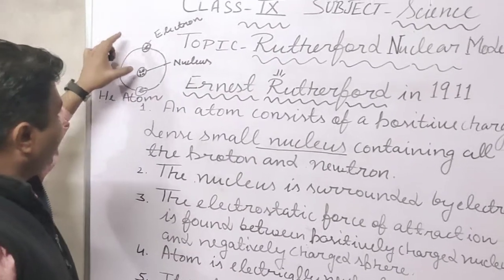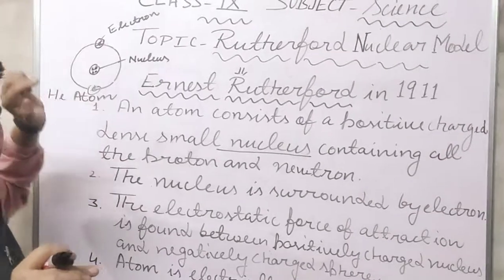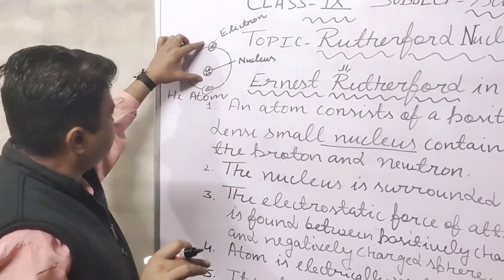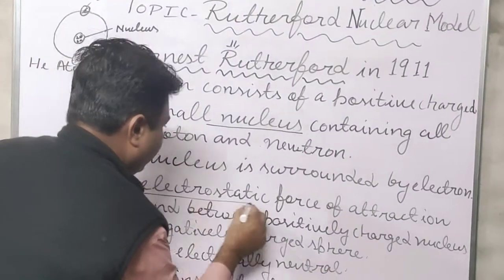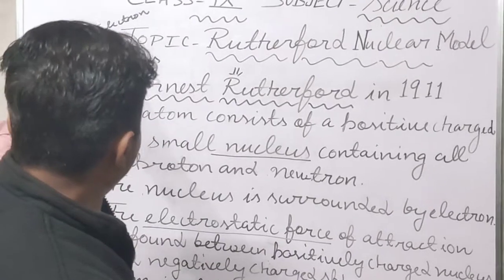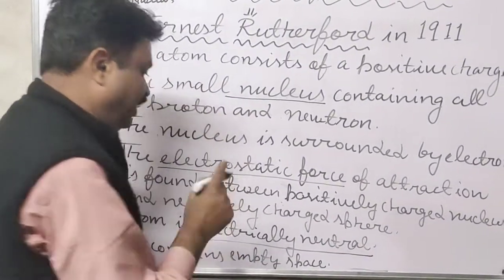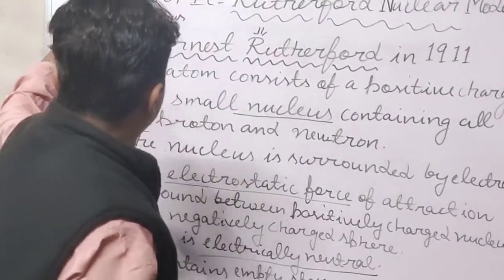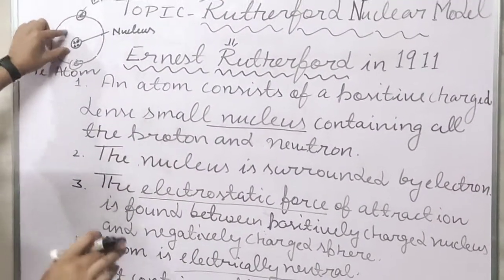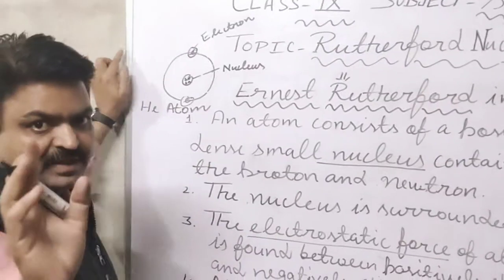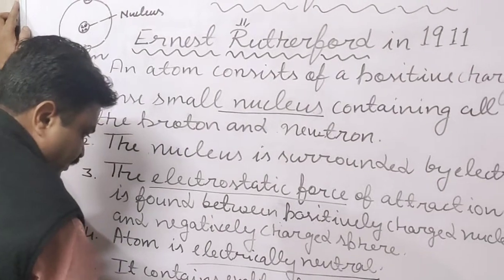Between the electrons and the nucleus: the nucleus is the positively charged particle because protons are found there, and electrons are negatively charged particles. There is an electrostatic force between them. Due to this, the whole atom is electrically neutral because electrons and protons are found in equal amounts. Also, the atom has empty space — there is nothing found in that space.